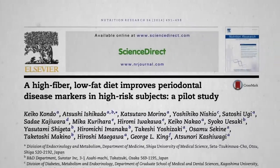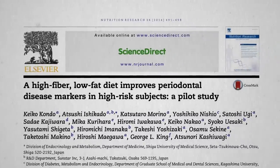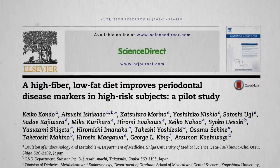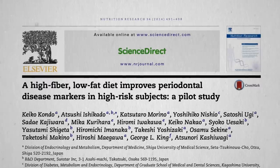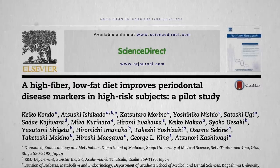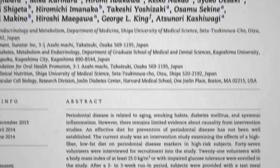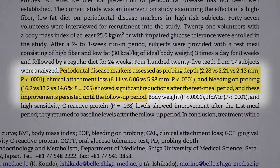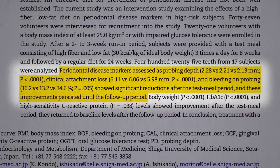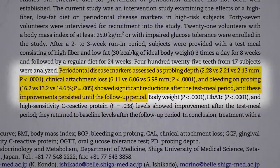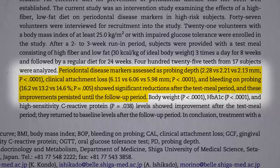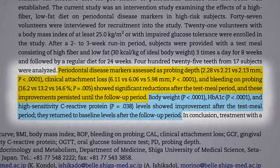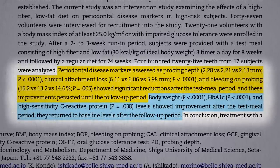This is what I was looking for. Though the title kind of ruins the suspense: a high-fiber, low-fat diet improves periodontal disease markers — in terms of probing depth, clinical attachment loss, and bleeding on probing, all the standard measures. And of course, eating a healthier diet also improved body weight, blood sugar control, and systemic inflammation.